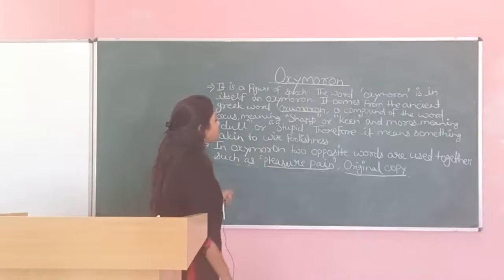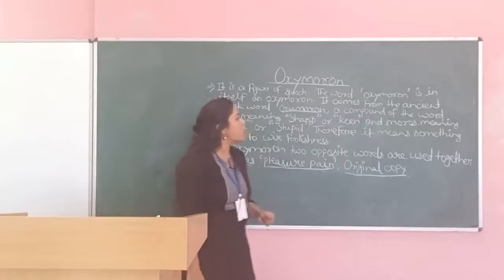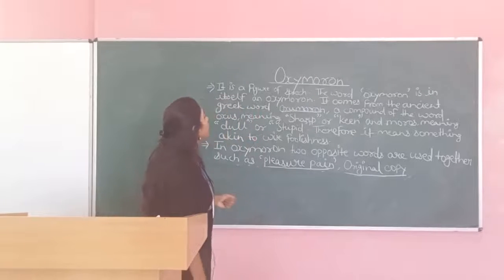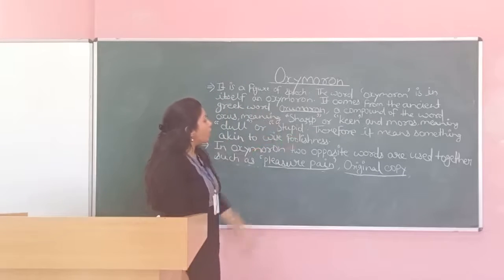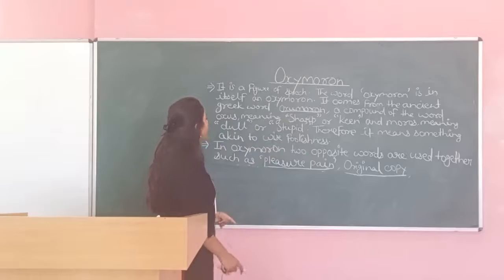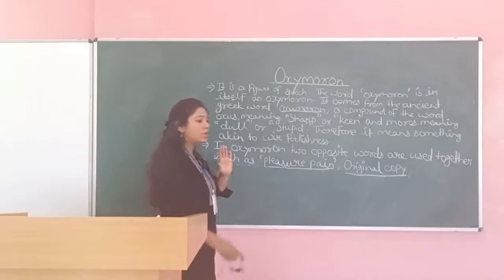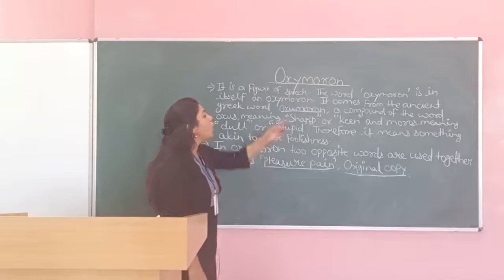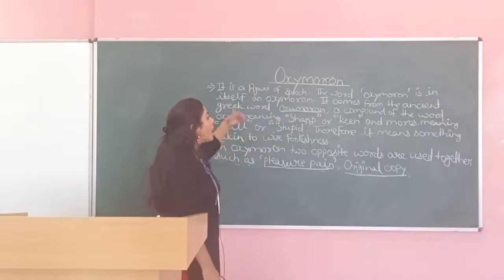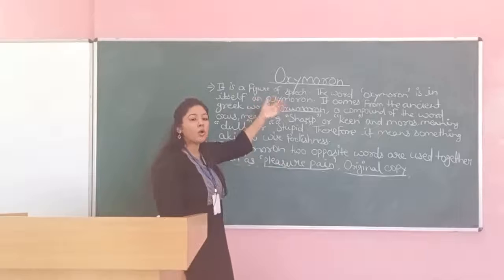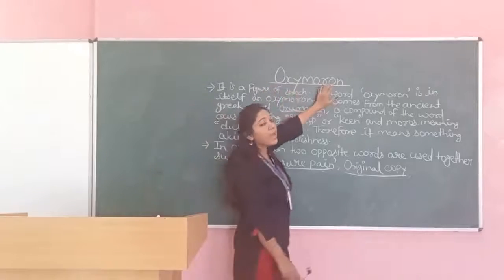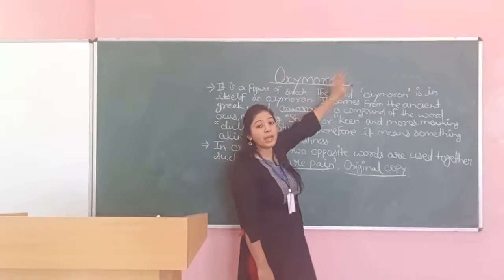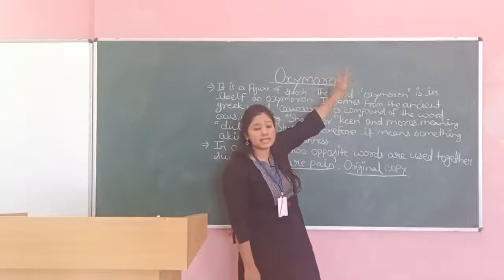Let's see again. Oxymoron is a figure of speech. This word itself is an oxymoron — it is a Greek word. If we divide it and see the meaning: 'oxus' means sharp and keen, and 'moros' means dull or stupid. So this word is itself an example of oxymoron.